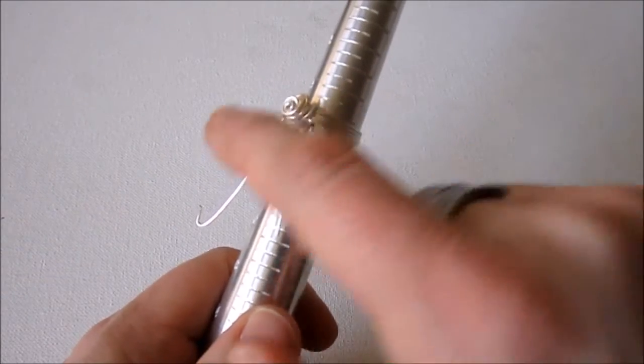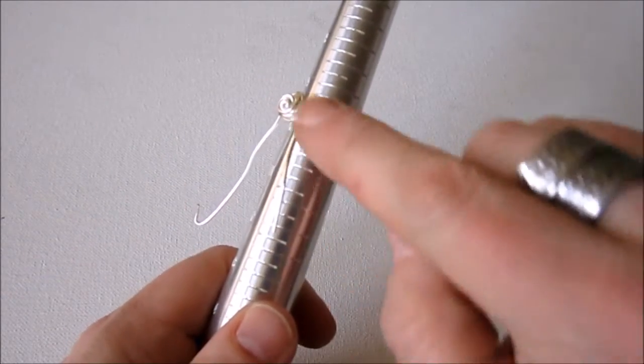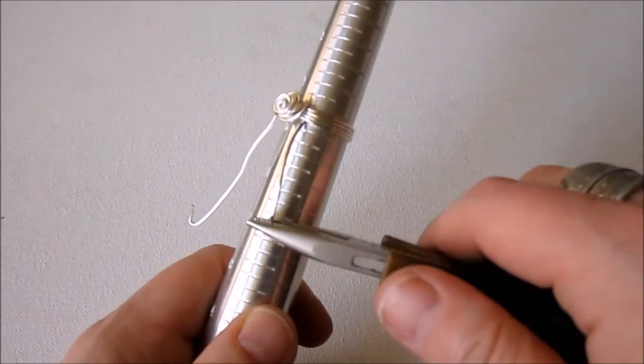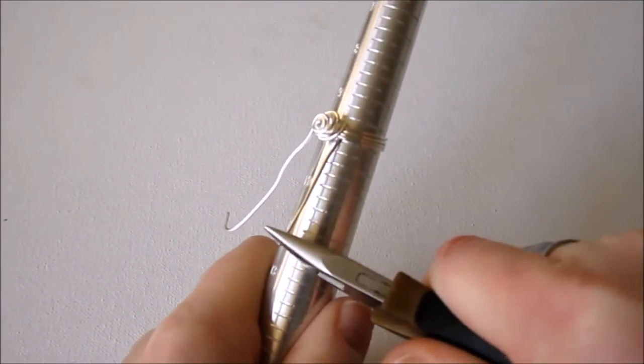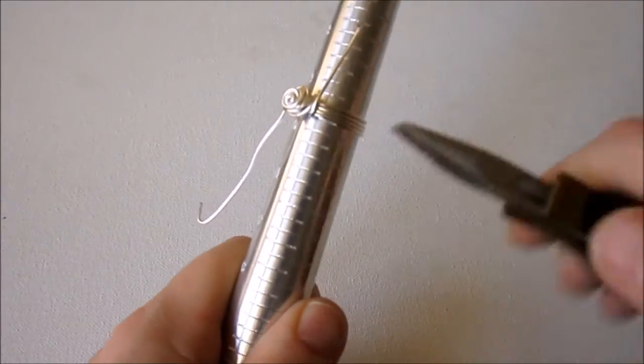So that the other side that we didn't actually pull tightly, now that is the side that's coming down. So we're going to do exactly the same thing. Pull as hard as we can and then twist it back up.